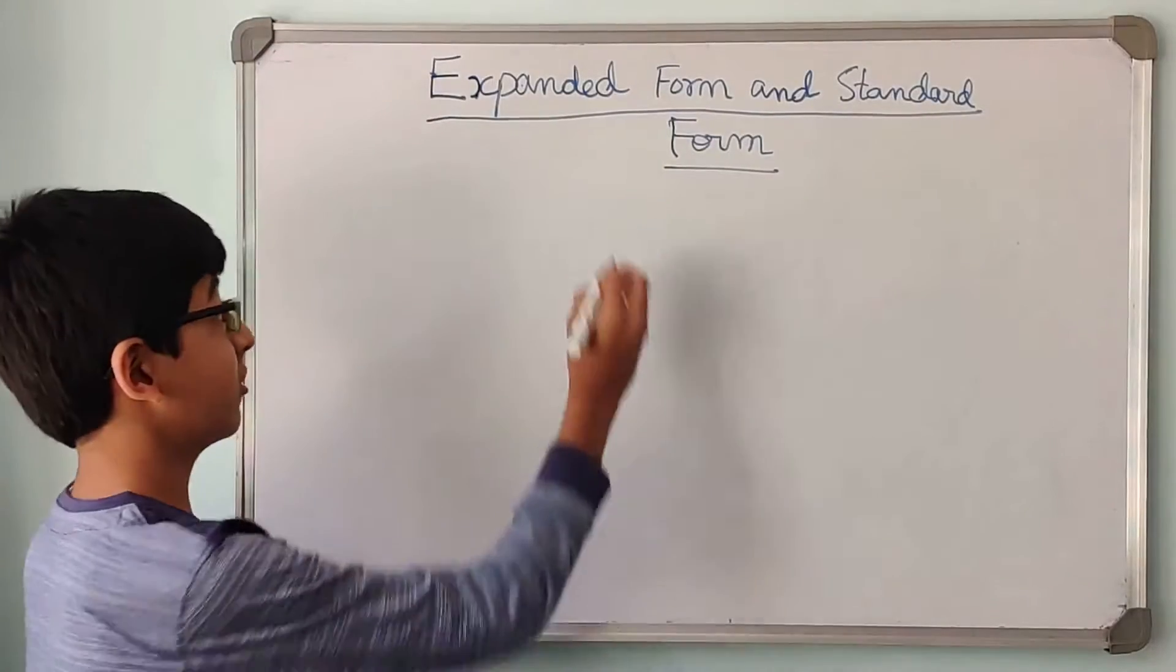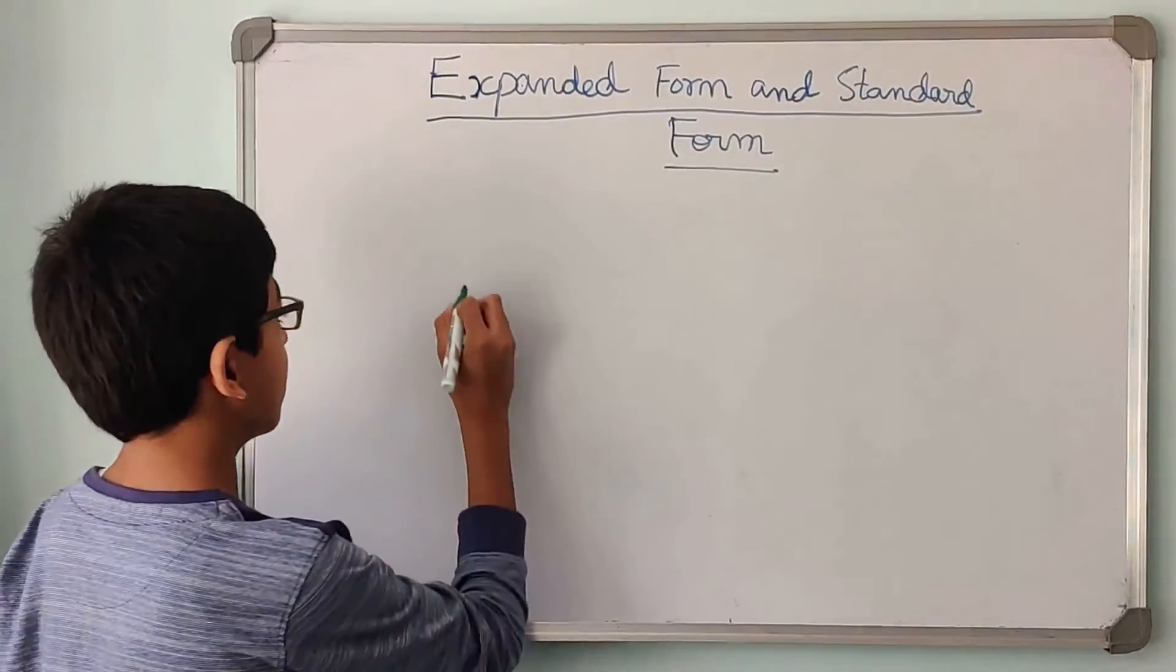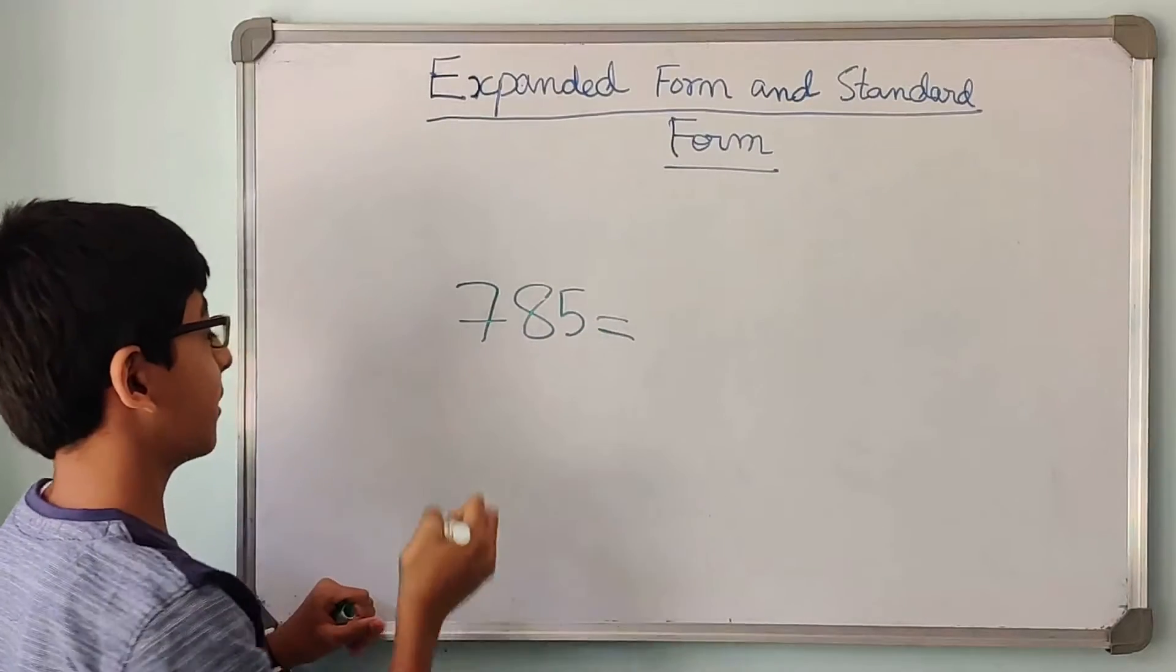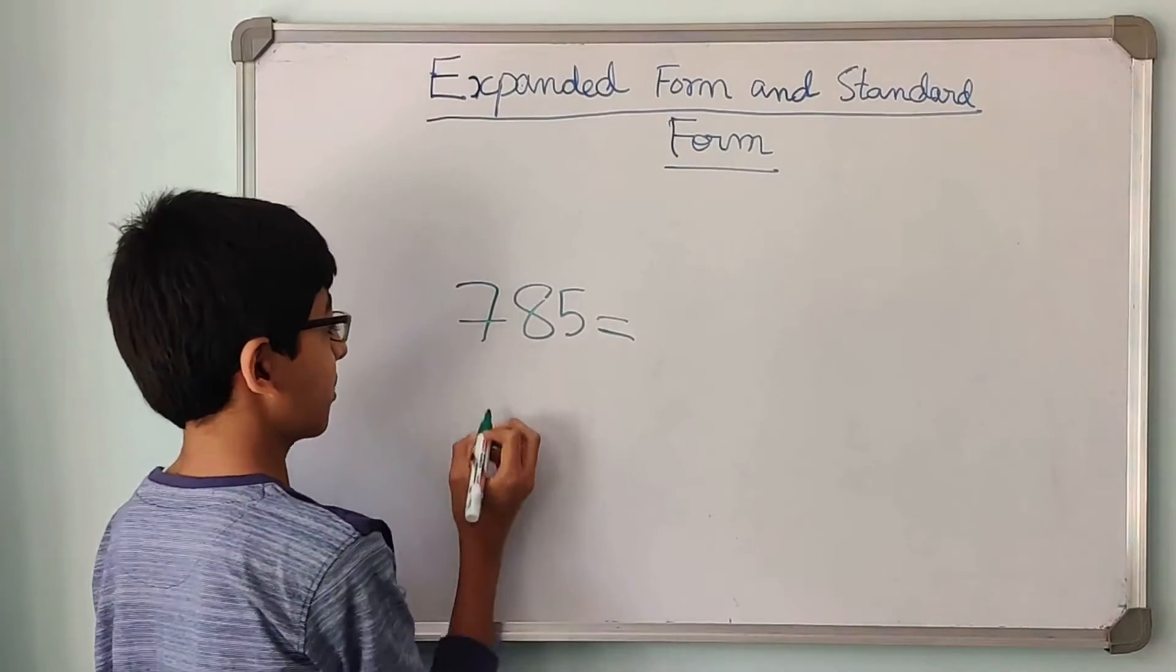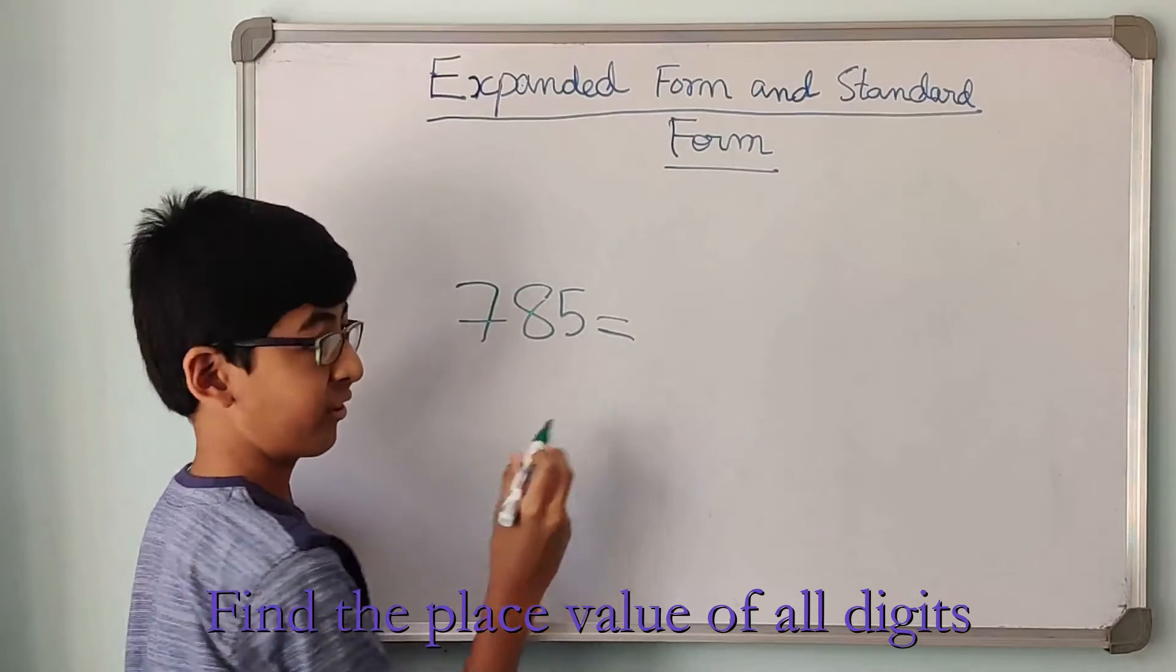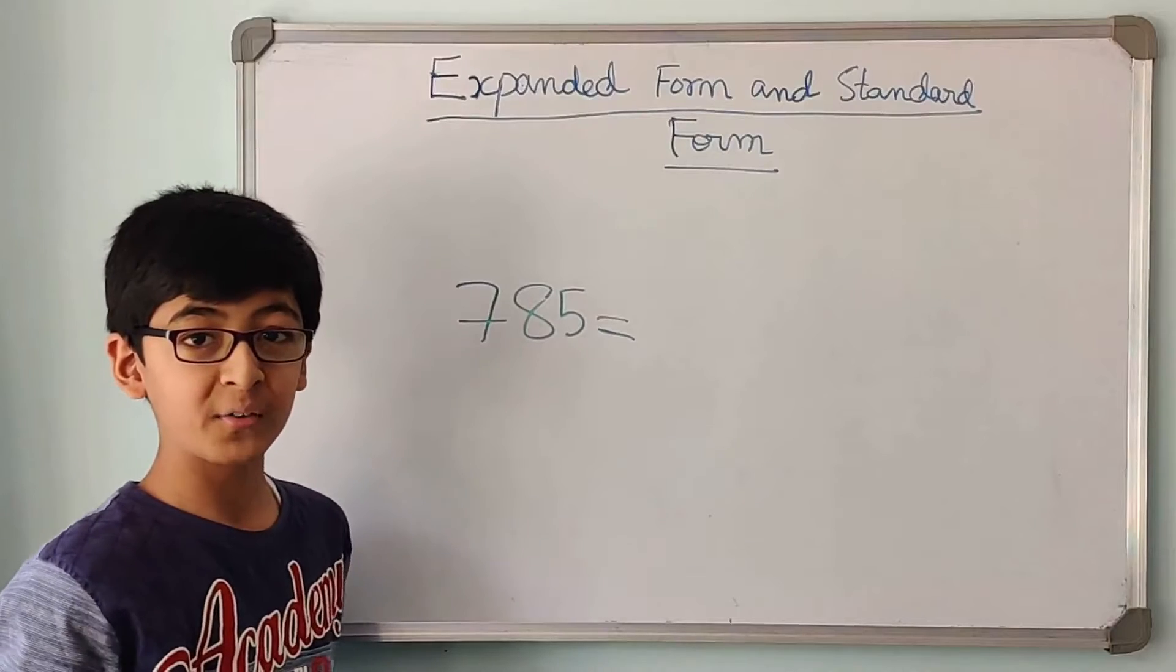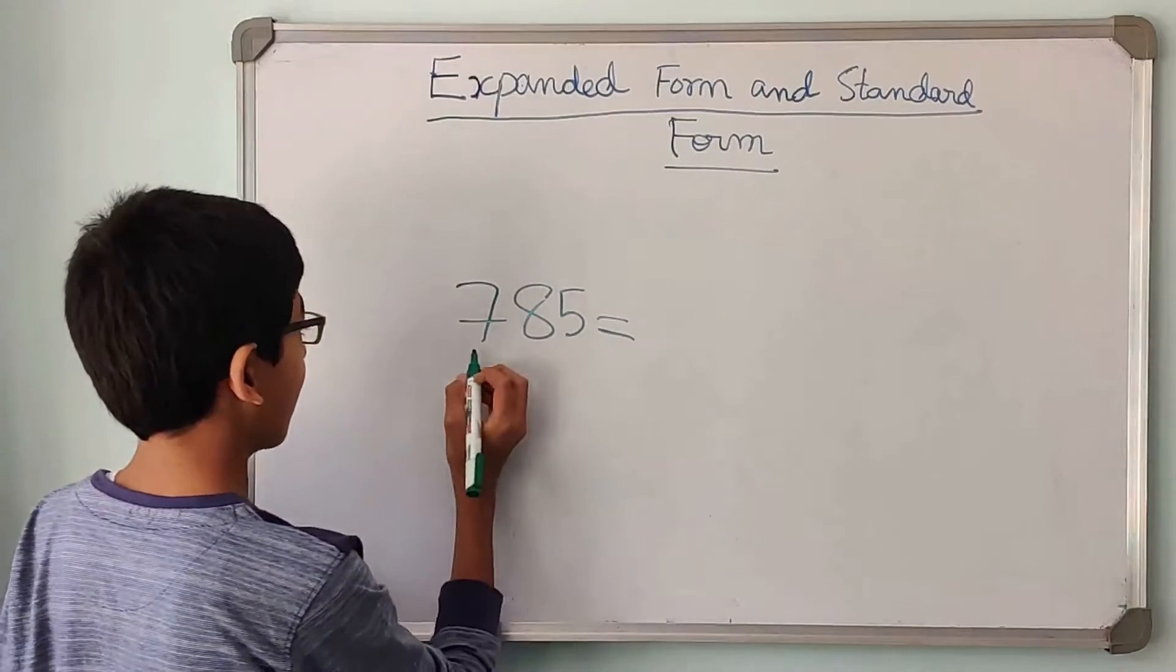So first we are going to learn about expanded form. What is expanded form? If we are given the number 785, we have to expand this number. And how would we expand the number? First we need to find the place value of all the digits. If you don't know what is place value, then you can refer to my place value video. I will leave a link in the description.